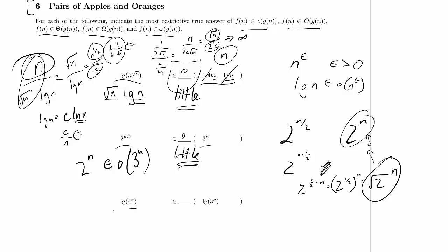Log of 4 to the n versus log of 3 to the n. Let's bring those exponents down: this is n times the log of 4. Log of 4 is just 2, but it doesn't really matter — it's just a constant, so we can get rid of it. This one is n times the log of 3, which is also just a constant we can get rid of. So we've got n over here and n over here, which means that's going to be theta.